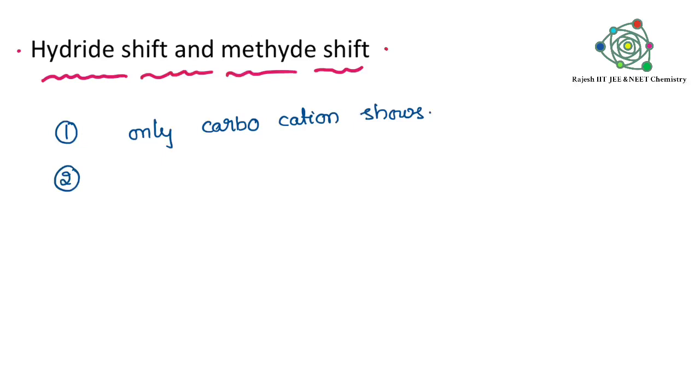This is a very important concept in halo alkanes. Now why are these carbocations showing this hydride shift and methide shift? The reason is to get stability.